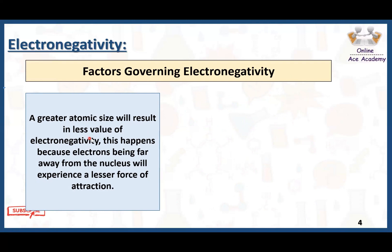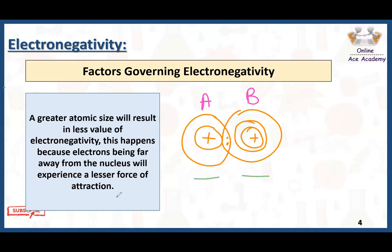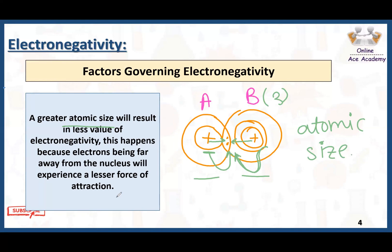A greater atomic size will result in a lesser value of electronegativity, because electrons farther from the nucleus experience a lesser force of attraction. Atom A has a small size with two shells, while atom B has three shells. Due to the larger size of atom B, its nucleus is farther from the shared electrons, so its attraction is less compared to atom A. This is how the size of an atom affects electronegativity.